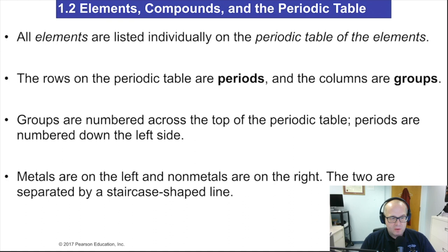Every element has a square, and those squares are arranged in periods, left to right, and groups, top to bottom. Groups are numbered across the top of the periodic table, and periods are numbered down the left-hand side. Metals are on the left-hand side of the table, non-metals are on the right-hand side, and the two are separated by this thing called a staircase. It's a zigzag line.